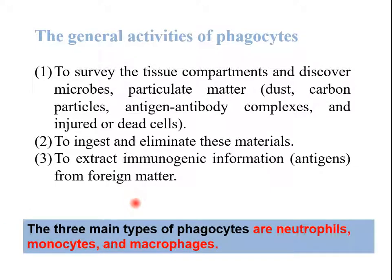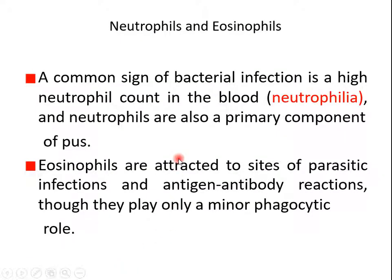We have three kinds of phagocyte cells including neutrophils, monocytes, and macrophages. Regarding neutrophils versus eosinophils: a common sign of bacterial infection is a high neutrophil level in the blood, which is called neutrophilia. Eosinophils play a minor phagocyte role compared to neutrophils, but are attracted to the site of parasite infections and antigen-antibody reactions.